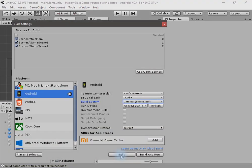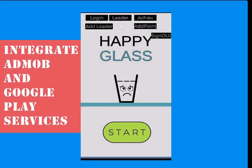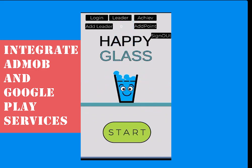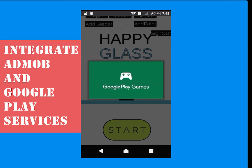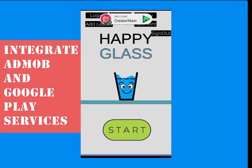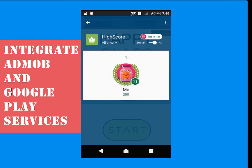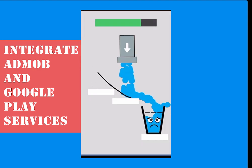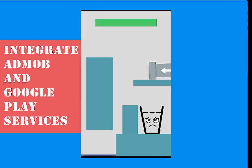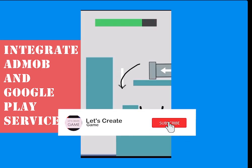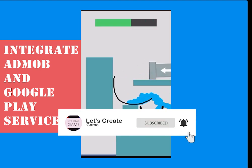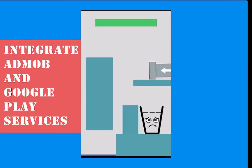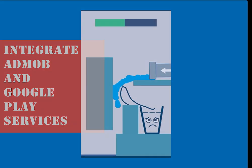Now click on Build and Run. Let's open the game on my phone and see if everything is working. I am able to sign in to Google Play services and I can see the leaderboard. In the next video we will learn how to integrate AdMob in this game. If you liked this video, don't forget to hit the like button and subscribe to this channel to see more game-related content. See you in the next video.